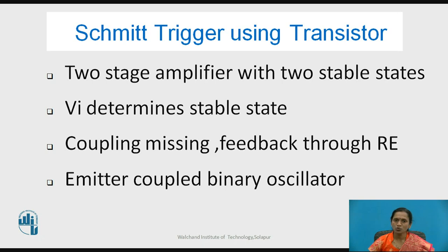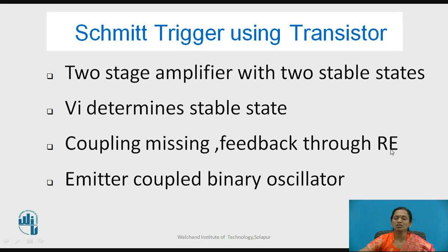The Schmitt trigger consists of two stages of amplifier and two stable states. Like the bistable multivibrator discussed in the previous session, it has a two-stage amplifier with two stable states. However, here there is no coupling and no trigger pulse is applied. The switching between stable states is determined by the amplitude of the input voltage, which determines either logic 0 or logic 1. Positive feedback is provided through RE, the emitter bypass resistor.